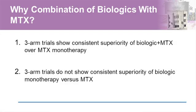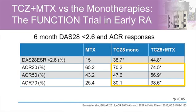Why combine biologics with methotrexate? There's a big issue about whether monotherapy can be as good, particularly with IL-6 blockade and JAK inhibition. However, the FUNCTION trial showed that even tocilizumab at high dose significantly outperforms tocilizumab without methotrexate by quite large margins. So even tocilizumab, which has been the monotherapy exemplar, actually benefits from methotrexate — reinforced by radiological data.